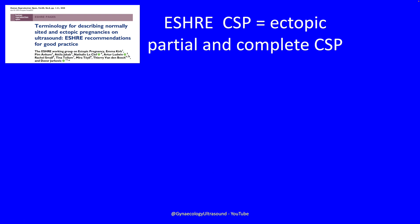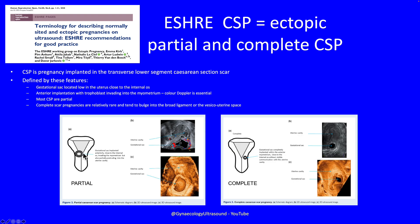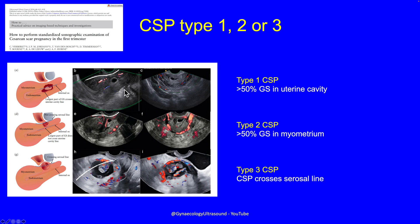With the SRA consensus, scar pregnancies are called ectopic and can be partial or complete. Most are partial, where the gestation sac is implanted and invading the myometrium but also partly in the uterine cavity, whereas a complete scar pregnancy is entirely embedded within the scar — these are much more rare. They are further classified as type 1, 2, or 3: in type 1 more than half of the gestation sac is in the uterine cavity; in type 2 more than half is in the myometrium; and in type 3 it is bulging and the scar pregnancy crosses the serosal line.